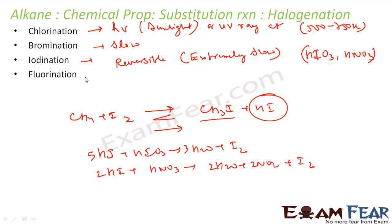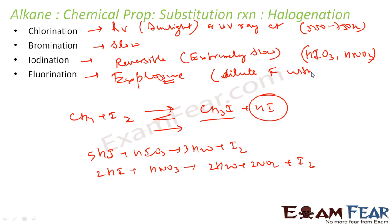Fluorination is almost explosive — very, very dangerous and very explosive. You have to make it less violent by diluting fluorine with nitrogen. So these are the different kinds of halogenation. Bromination is okay but very slow. Iodination is very, very slow, reversible, and you need oxidizing agents to proceed in the forward direction.